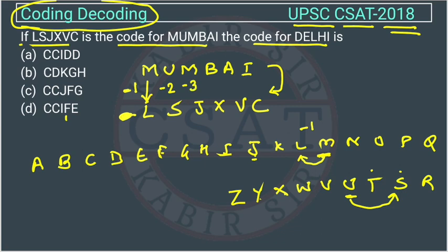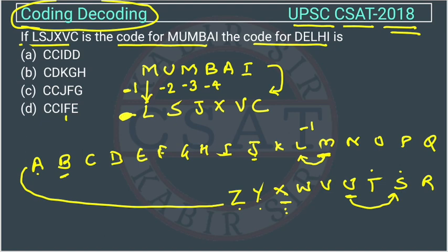Now B is converted into X. B is here and X is four steps backward — first, second, third, fourth — so minus 4. We consider it as cyclic, so before A it will be Z. Then A is converted into B — going five steps backward — so minus 5. And I is converted into C, which is six positions backward — so minus 6.